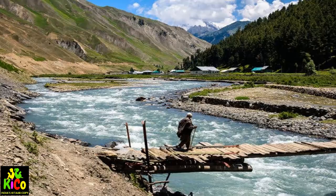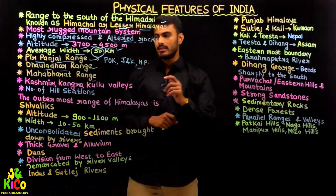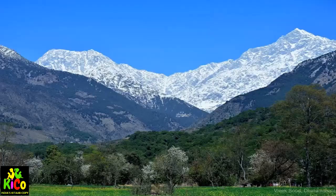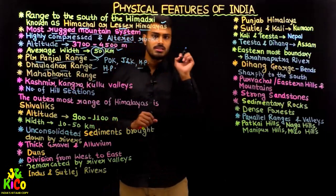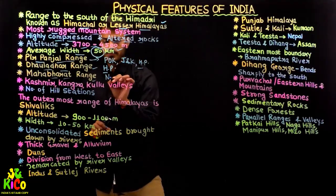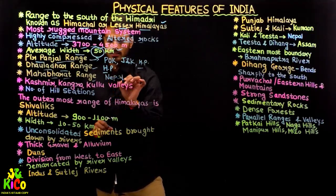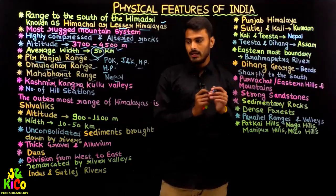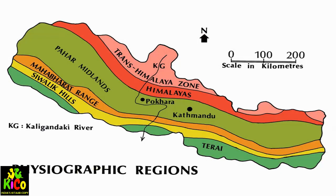Then we have the Dhauladhar range, which mainly comprises the Indian state of Himachal Pradesh — the Kullu and Manali valleys are found in this range. Then we have the Mahabharat range, which is mainly found in the country of Nepal, in what is known as the Nepal Himalaya.